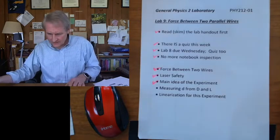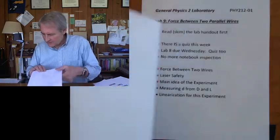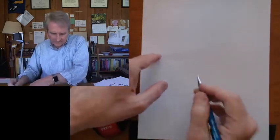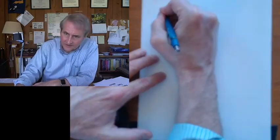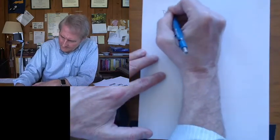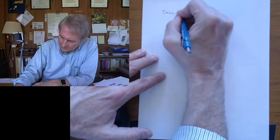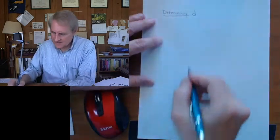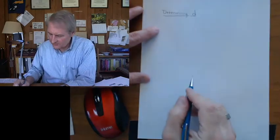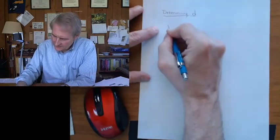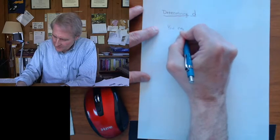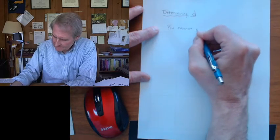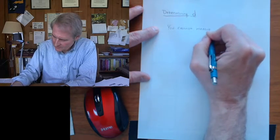And so there's a simple way to measure the distance by measuring the diameter of the wire and the outer spacing of the wire. So here's determining d. d is the distance center to center between the wires. Okay, you cannot measure this directly.